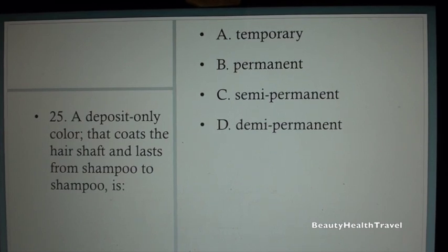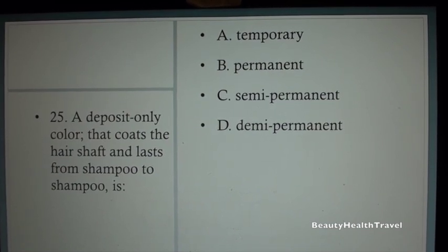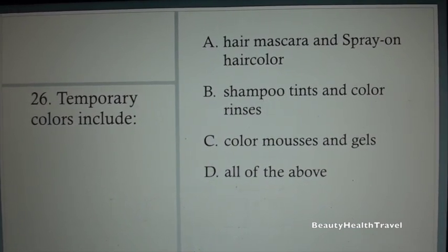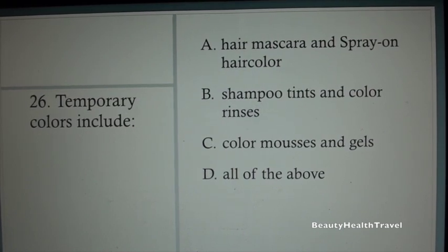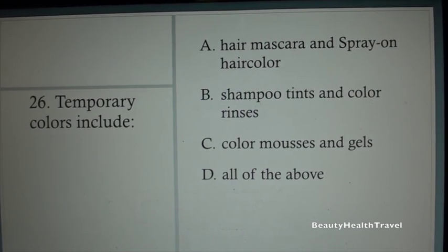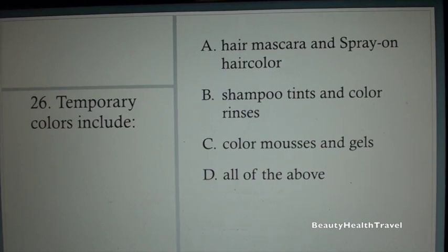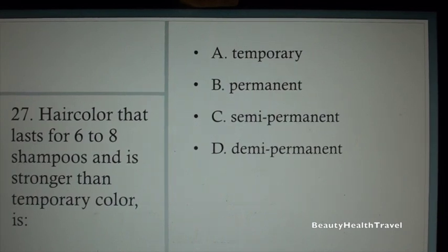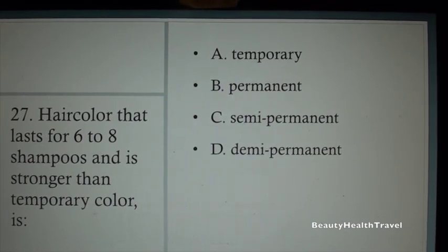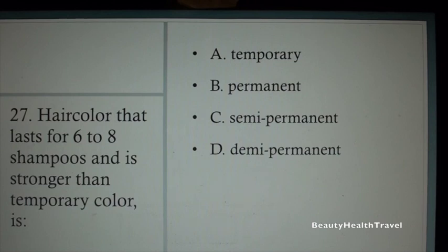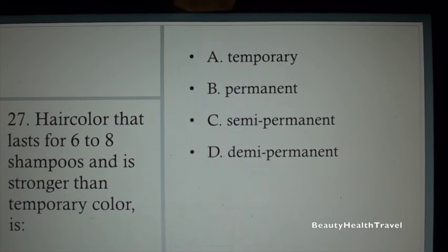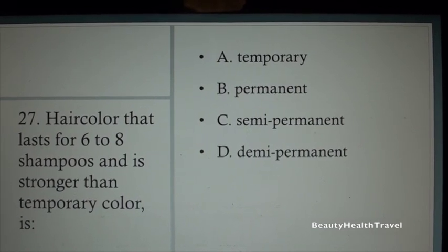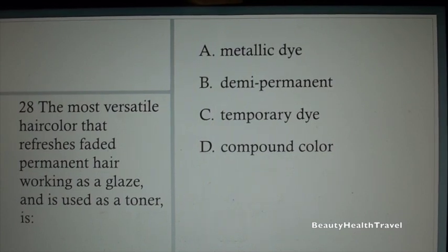Question 24: The four types of professional hair color are temporary, permanent, demi-permanent, and: A. Semi-permanent, B. Progressive, C. Metallic, D. Compound. Question 25: A deposit-only color that coats the hair shaft and lasts from shampoo to shampoo is: A. Temporary, B. Permanent, C. Semi-permanent, D. Demi-permanent.